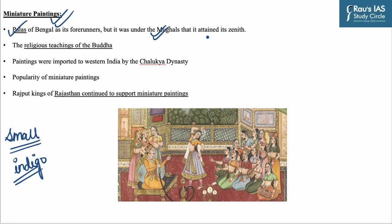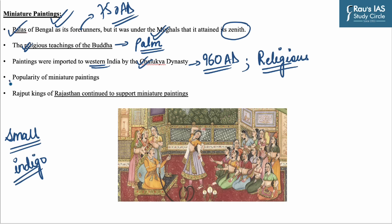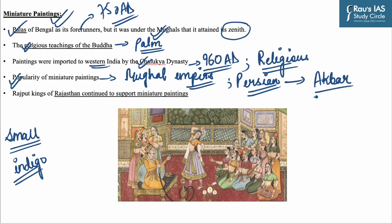It was under the Mughals that miniature paintings attained their zenith. When the Palas ruled over India's eastern region around 750 AD, miniature paintings first appeared there. The religious teachings of Buddha, including his images, were inscribed on palm leaves, which is how these paintings became well known. The Chalukyan dynasty imported similar paintings to western India around 960 AD. The popularity of miniature paintings expanded with the Mughal Empire, and Indian miniature paintings merged elements of the Persian style during Akbar's reign.